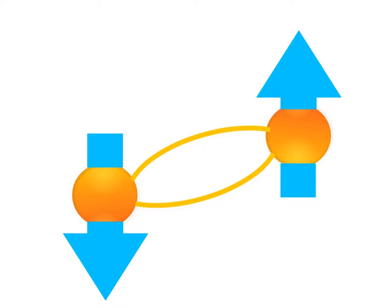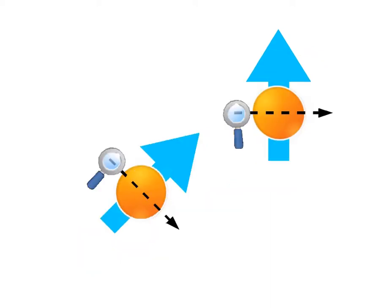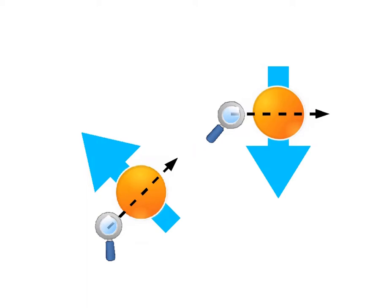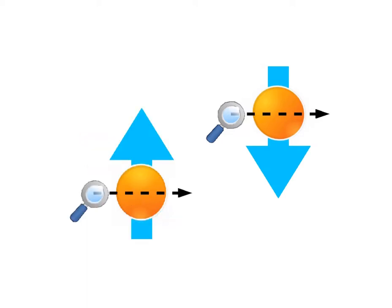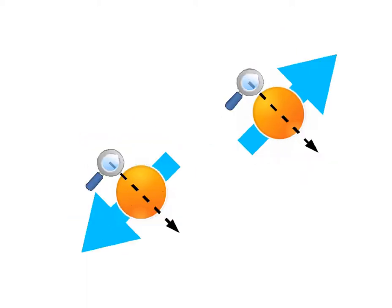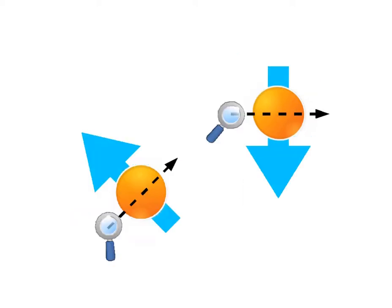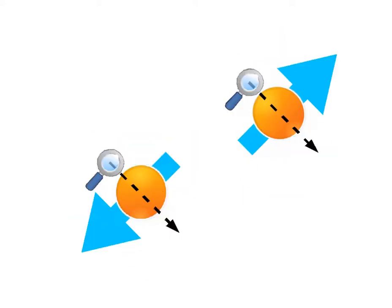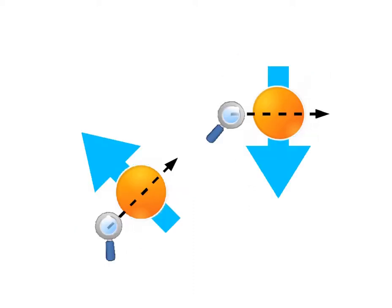Entangled electrons always have opposite spins about any chosen axis. Based on simple probability, if the spin around three different axes chosen randomly for each electron of many pairs is recorded, a subsequent tally will show more than fifty percent matches if the electrons have definite spin at all times, and exactly fifty percent if they don't have definite spin until observed.